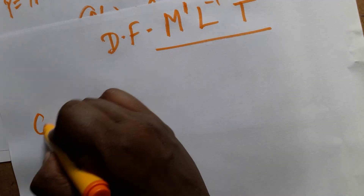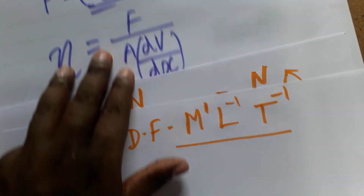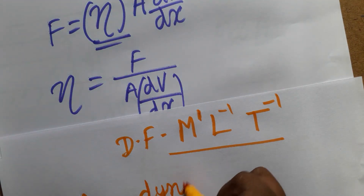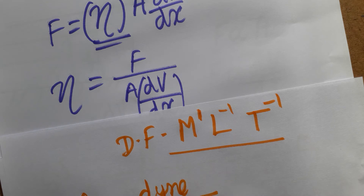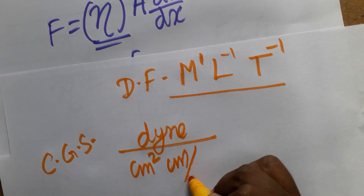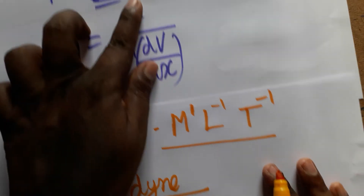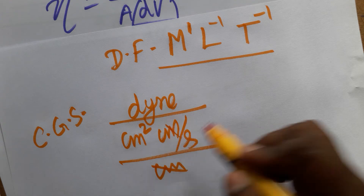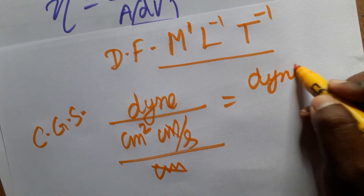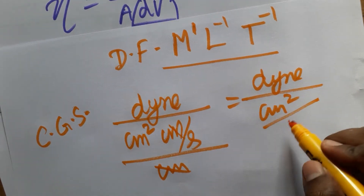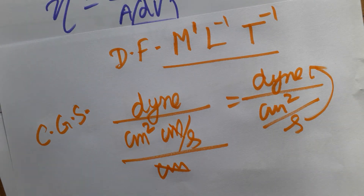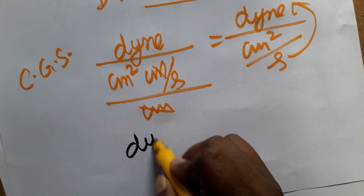Now in the CGS system, the unit of coefficient of viscosity is found using the same formula. Force in CGS is dyne, area is centimeter squared, velocity is centimeter per second, and displacement is centimeter. The centimeters cancel, giving dyne per centimeter squared divided by second, which rearranges to dyne·second per centimeter squared.